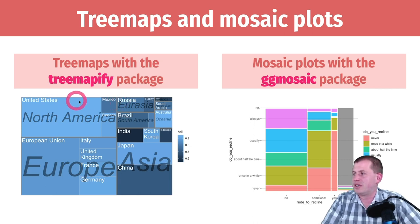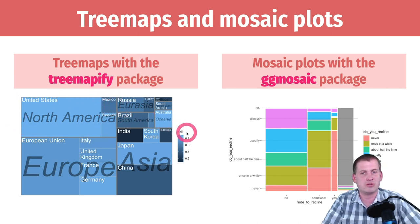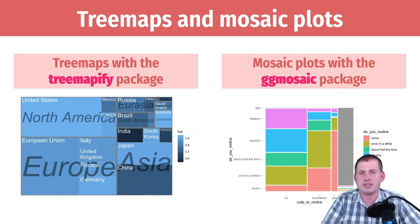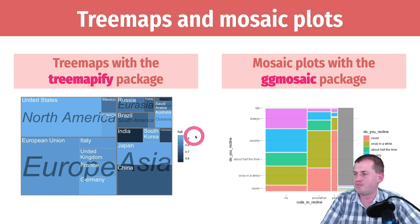Instead of having slices, you have giant rectangles cut up into sizes proportional to the thing you're showing. So this is the Human Development Index, which is a scale that the World Bank creates showing how developed a country is from zero to one.